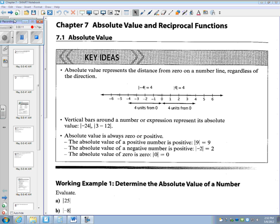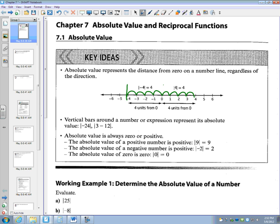Absolute value represents the distance from zero on a number line, regardless of the direction. The absolute value of 4 is 4 because it's 4 units away from zero. Similarly, the absolute value of negative 4 is 4 because it's 4 units away.